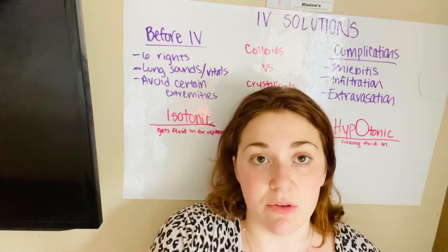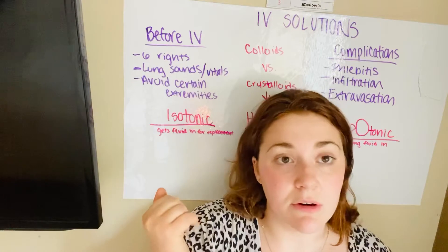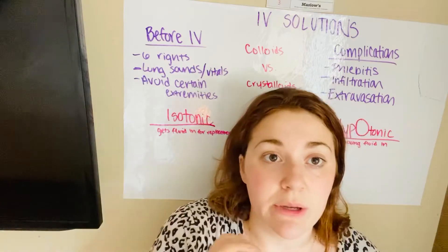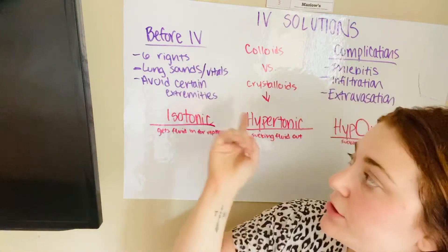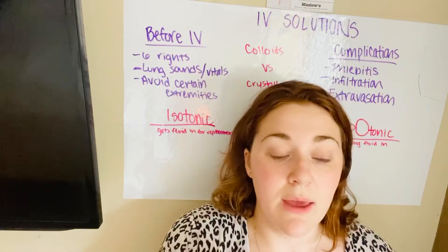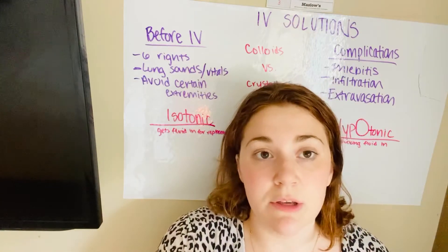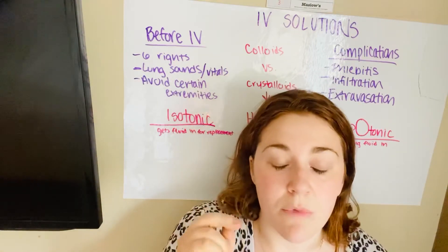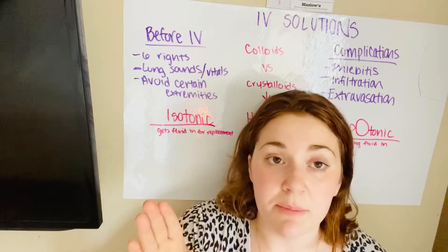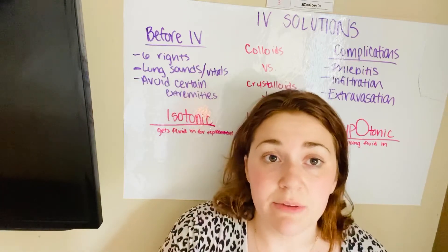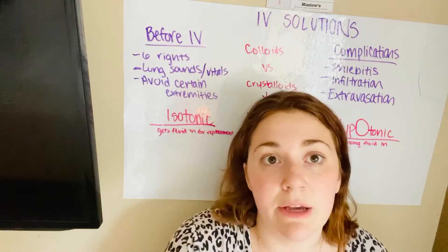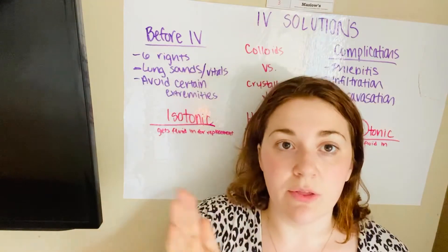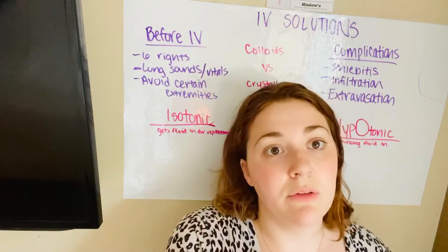So how do we start this process? First, IV fluids are considered another medication, so you're going to do those six rights of med admin on whatever fluid is ordered. The most important thing is that you want to listen to their lung sounds — that's the most important assessment piece you want to do first. But you also want to do a set of vitals, because if the patient is having dehydration, they might have a low BP and a high heart rate. You want to look at these components because that's important to what fluids you choose as well.